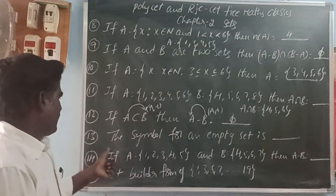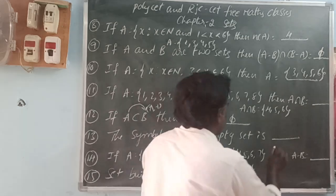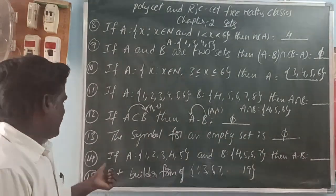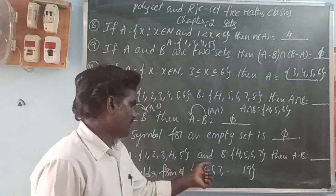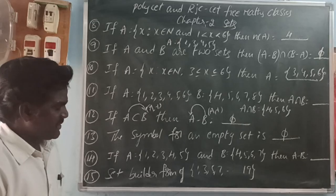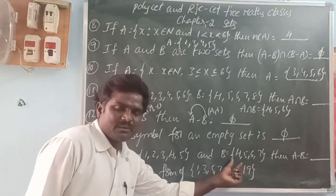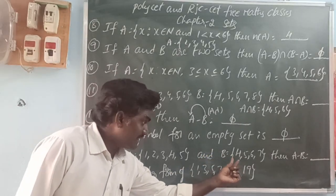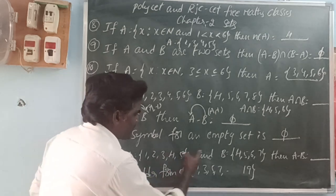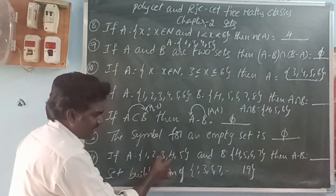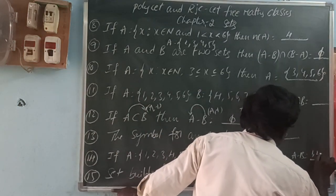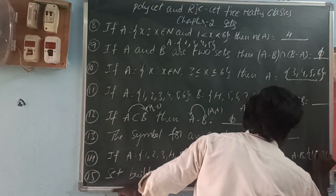Next: the symbol for an empty set. Empty set means there are no elements in a set. For example, A equals {1, 2, 3, 4, 5} and B equals {4, 5, 6, 7}. Then A minus B means the elements of B which are in A — those elements we subtract. So 4 and 5 we subtract. The remaining elements in A are 1, 2, 3. This is the difference.